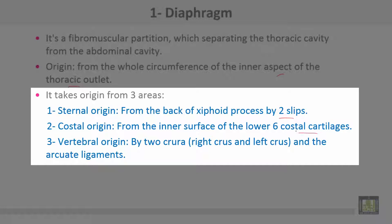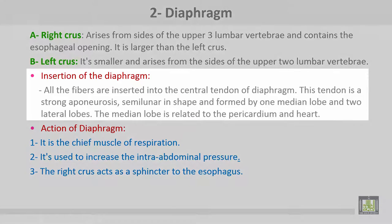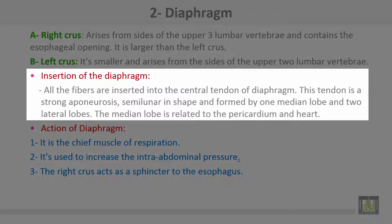Number three: vertebral origin, by two crura — right crus and left crus — and the arcuate ligaments. The right crus arises from the sides of the upper three lumbar vertebrae and contains the esophageal opening, and it is larger than the left crus. The left crus is smaller and arises from the sides of the upper two lumbar vertebrae.